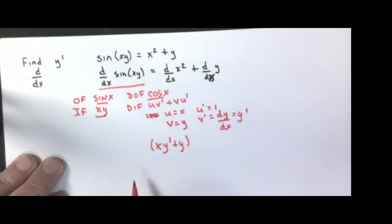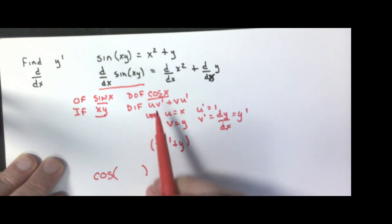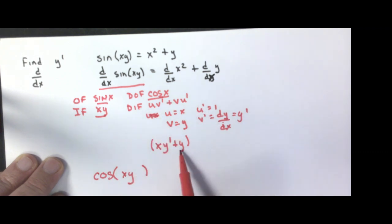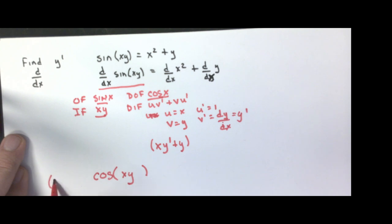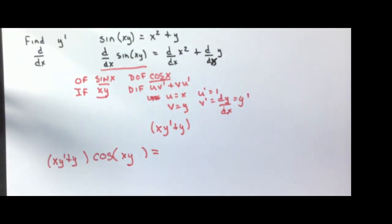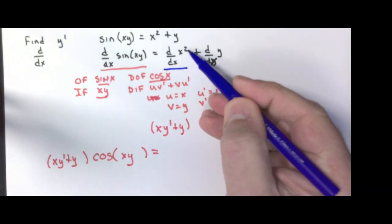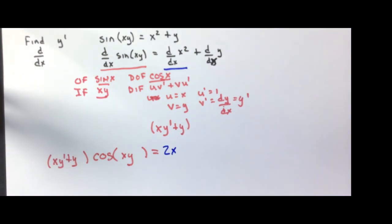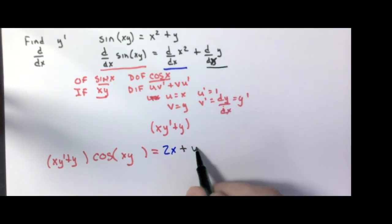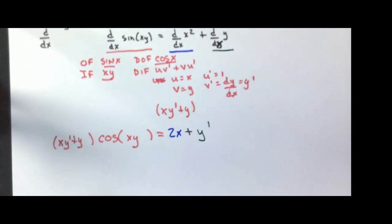Using the chain rule: take the derivative of the outside function — cosine of xy — then multiply by the derivative of the inside function, giving cosine of xy times (x·y prime plus y). On the right-hand side, the derivative of x squared is 2x, and the derivative of y with respect to x is just y prime. We are solving for y prime.